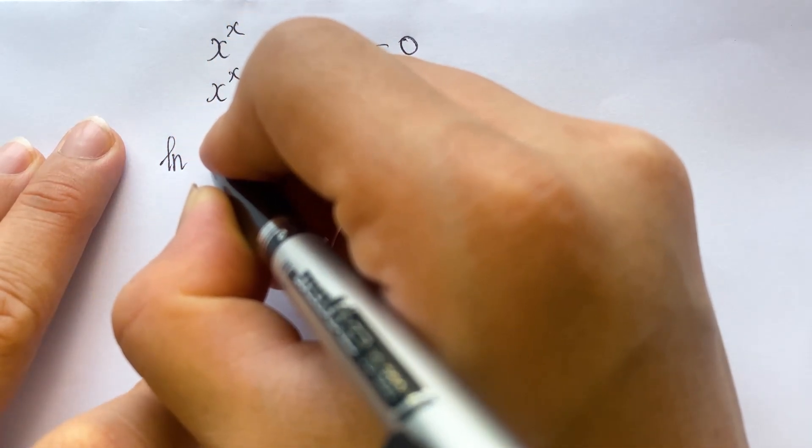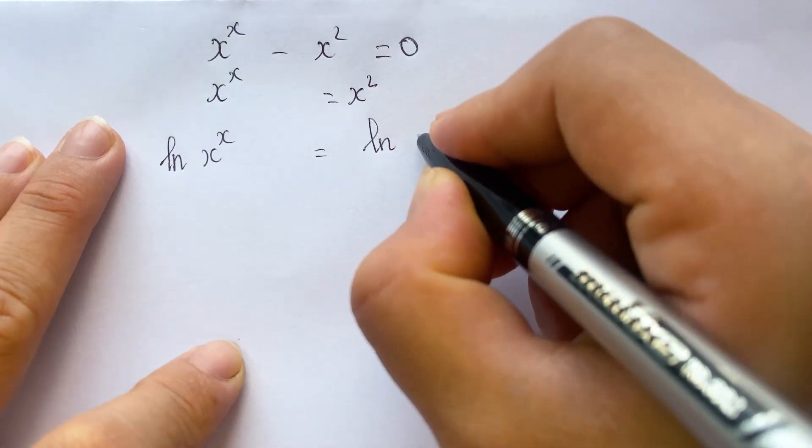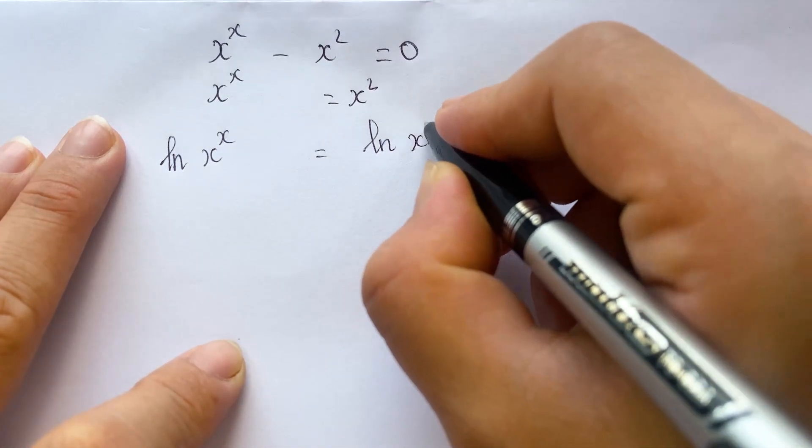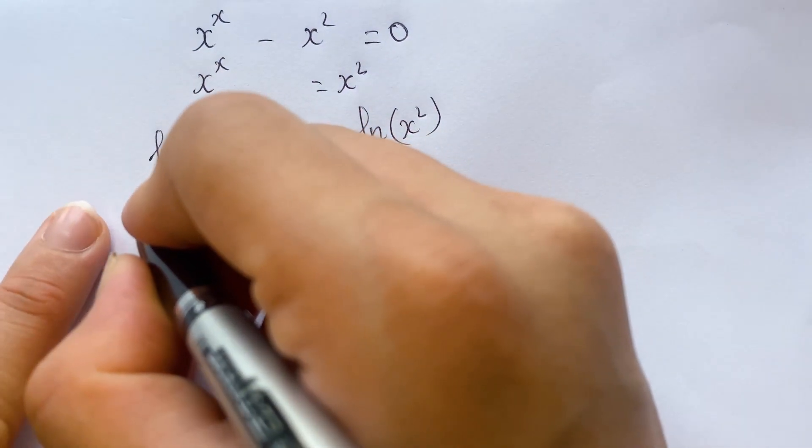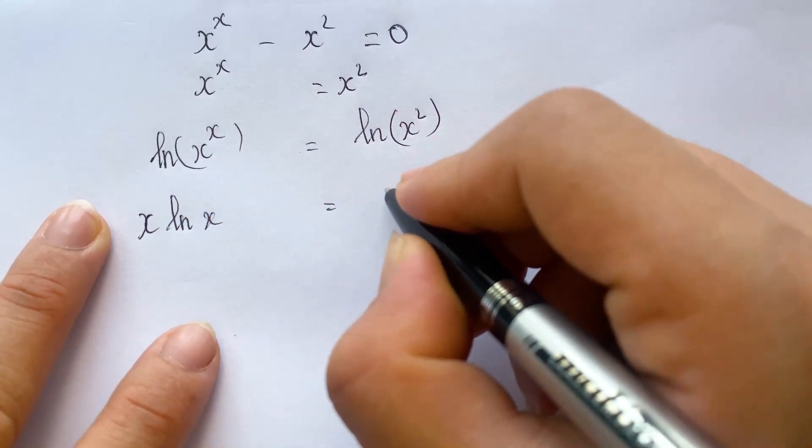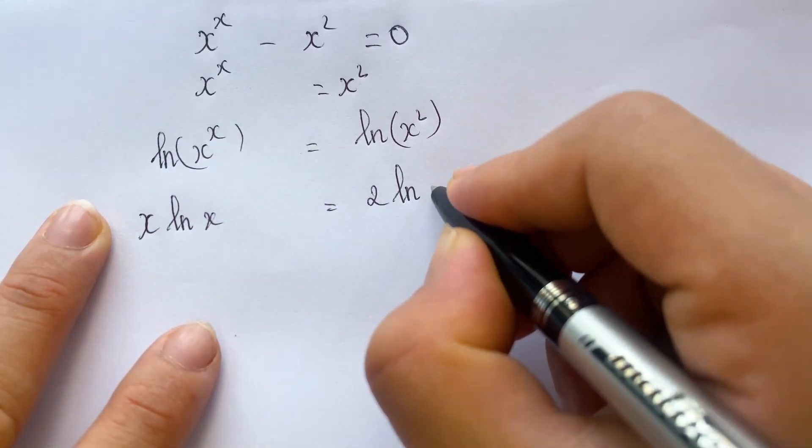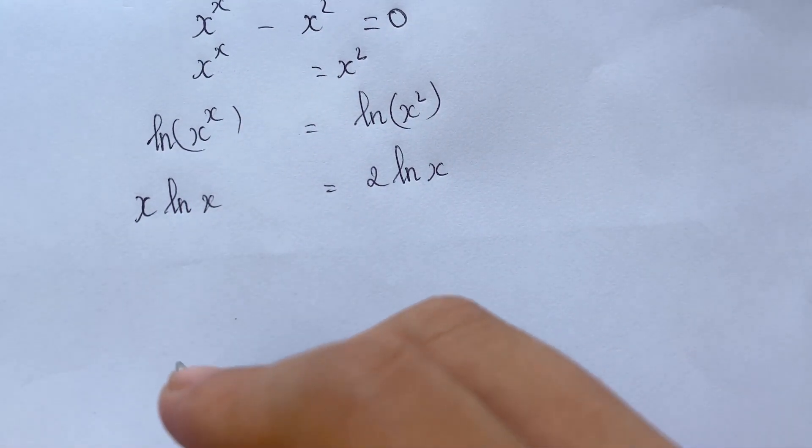Therefore, we can have natural logarithm of x power x equals natural logarithm of x square. And then we can write x natural logarithm of x equals 2 natural logarithm of x. And so for next,